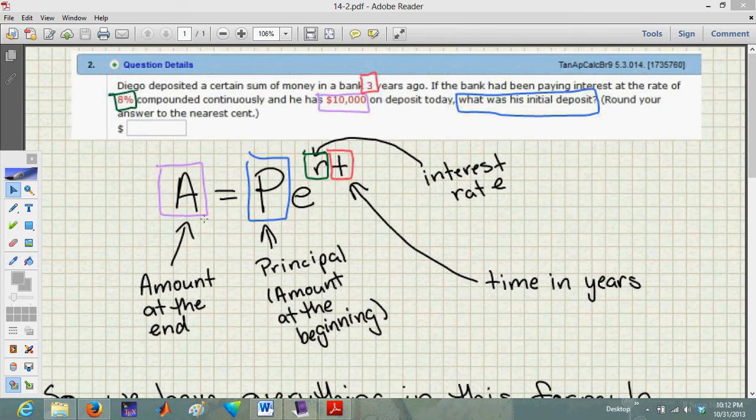So this is the amount at the end. You need to have common sense while reading these to make sure you're plugging things in the right place. P, the amount at the beginning, they actually don't give that to us. That's what we're going to be looking for when we solve this formula. What was his initial deposit? Initial - that's the amount at the beginning, that's P. That's something we don't know.